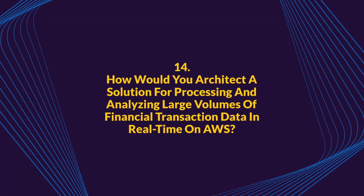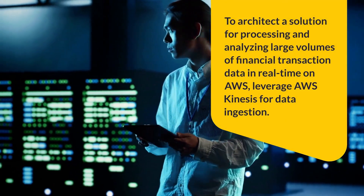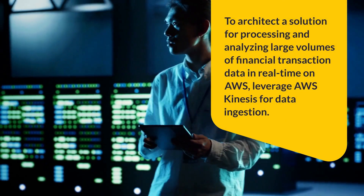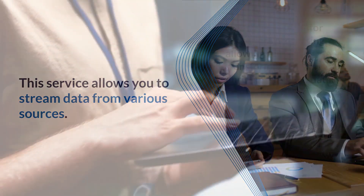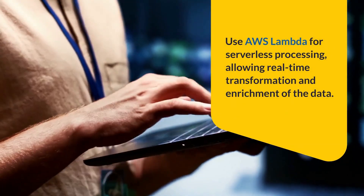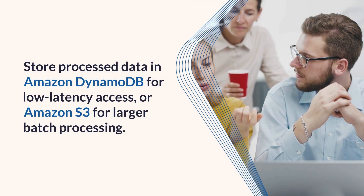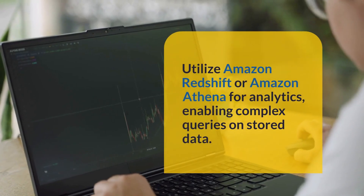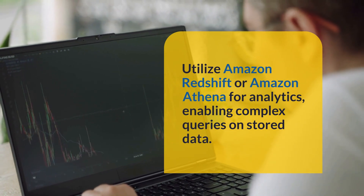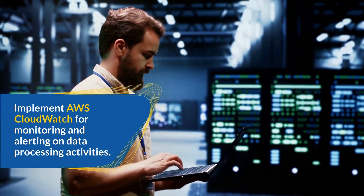Question 14: How would you architect a solution for processing and analyzing large volumes of financial transaction data in real-time on AWS? Leverage AWS Kinesis for data ingestion, streaming data from various sources. Use AWS Lambda for serverless processing, allowing real-time transformation and enrichment of the data. Store processed data in Amazon DynamoDB for low-latency access, or Amazon S3 for larger batch processing. Utilize Amazon Redshift or Amazon Athena for analytics, enabling complex queries on stored data. Implement AWS CloudWatch for monitoring and alerting on data processing activities.